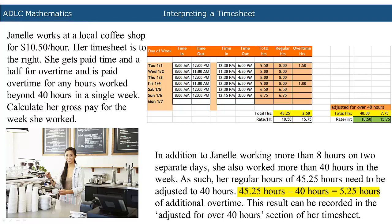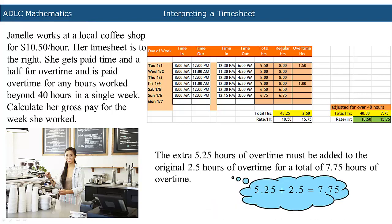Because of this, her regular hours need to be adjusted. Subtracting 40 hours from 45.25 hours results in a total overtime of 5.25 hours. This can be recorded in the adjusted for over 40 hours section of her timesheet. The extra 5.25 hours of overtime must be added to the original 2.5 hours of overtime for a total of 7.75 hours of overtime.